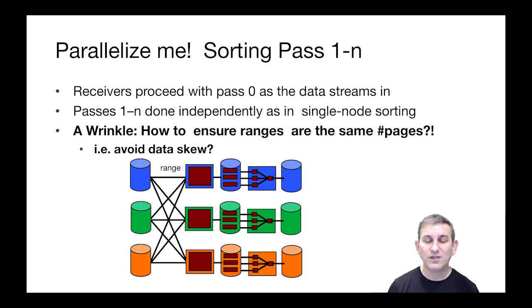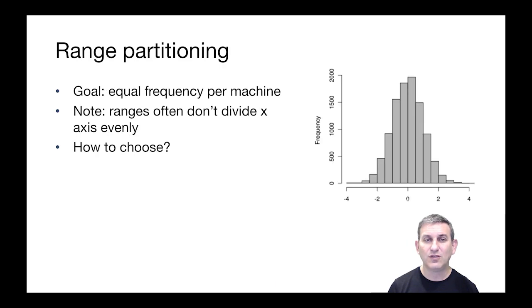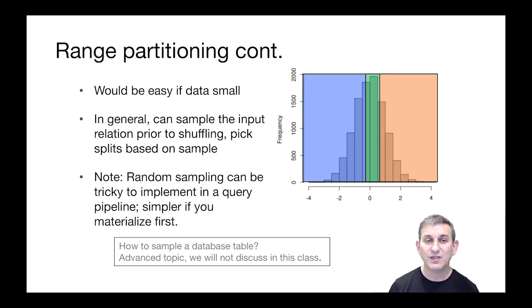The way we're going to have to do that is by understanding the distribution of values across tuples. So if our goal is equal frequency per machine, every machine should get the same number of tuples. Note that the ranges will not divide the x-axis evenly. We have to choose the ranges so that we get the same area under the curve in each partition, the same number of tuples in each partition. And so we can do something like this, where we've got roughly the same area under each one of these bars in this bar chart for the data assigned to three machines: blue, green, and orange.